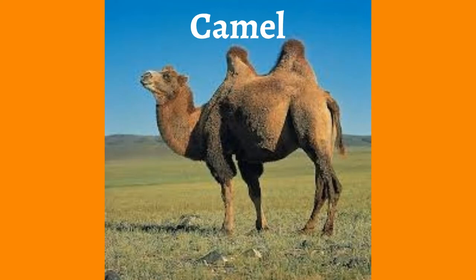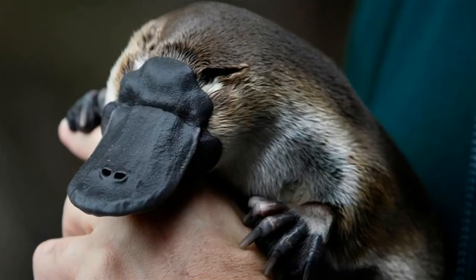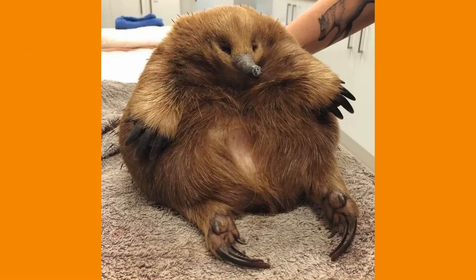This is a camel with two humps — the humps have a function: they store fat which can be converted to water and energy when none is available. Camels are often in deserts, so they need those humps to store energy for when they don't have access to water or food for a long time. The platypus and echidna are the only two types of mammals on Earth that lay eggs — those are the only two mammals that can lay eggs.